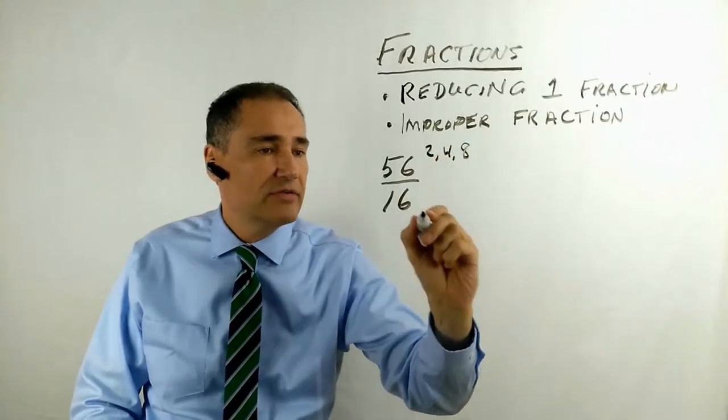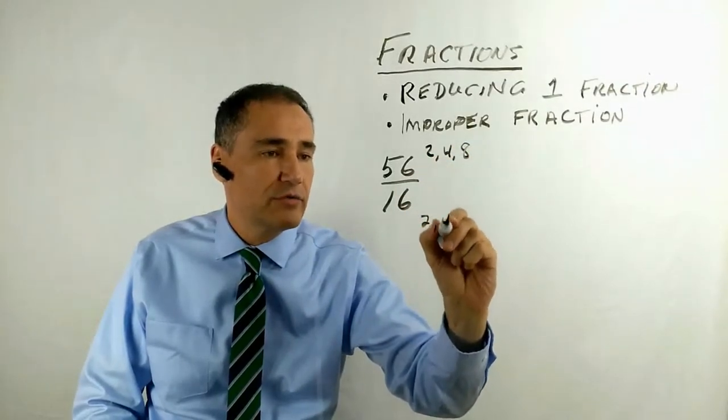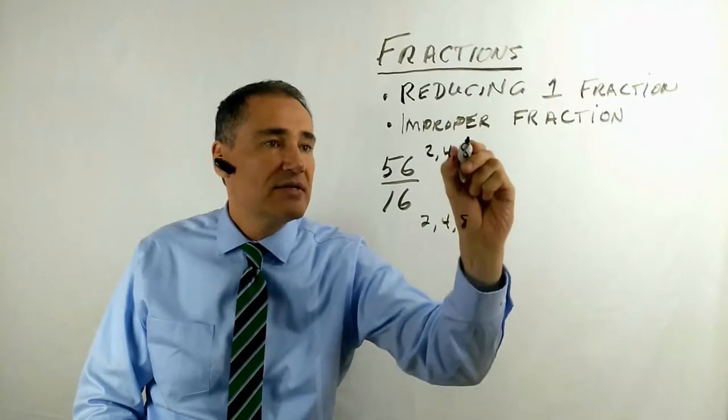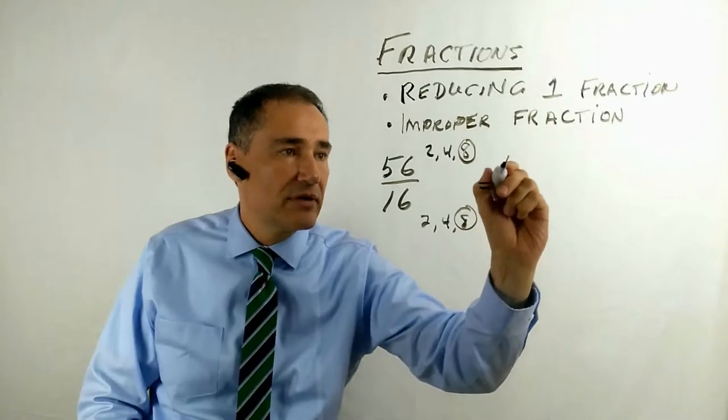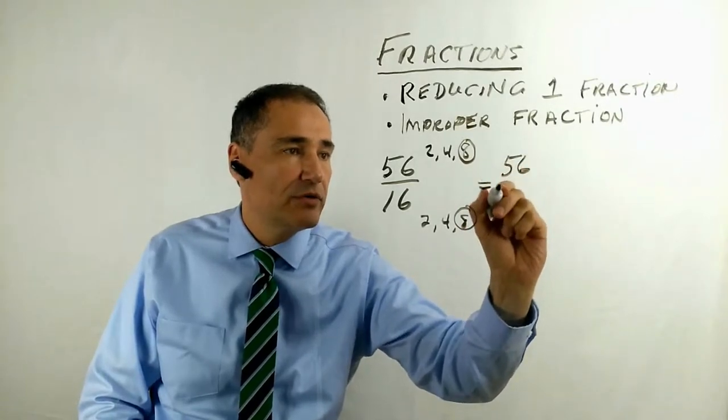2, 4, and 8 for 56. 16 also has factors of 2, 4, and 8. So let's take the highest, most common factor. Using that will be the quickest way to reduce this.